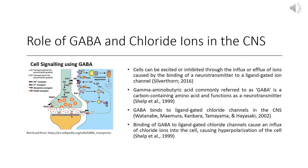One of the ways cells can be excited or inhibited is through the influx or efflux of ions through a ligand-gated ion channel, to which a signal such as a neurotransmitter has been bound. For instance, in the case of excitation of skeletal muscle, the neurotransmitter acetylcholine binds to nicotinic receptors, resulting in an influx of sodium into the muscle cell, causing depolarization of the cell.